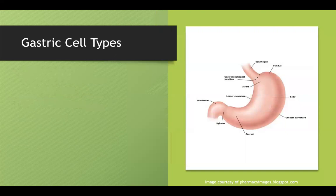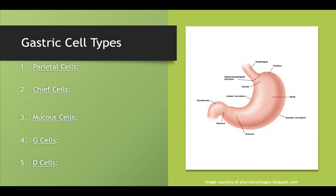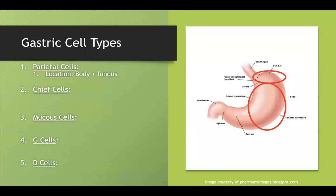For the stomach, there are five important cell types to recognize, and I have useful mnemonics to help. Here are the five: parietal cells, chief cells, mucus cells, G cells, and D cells. I'll go through each in order.